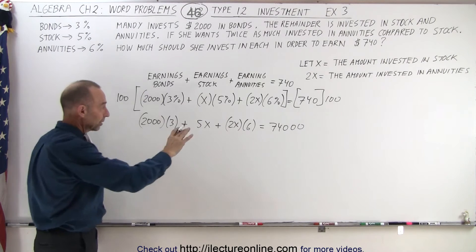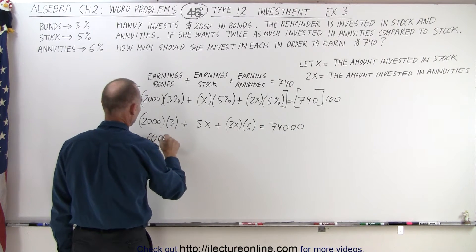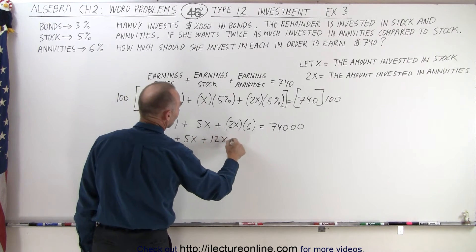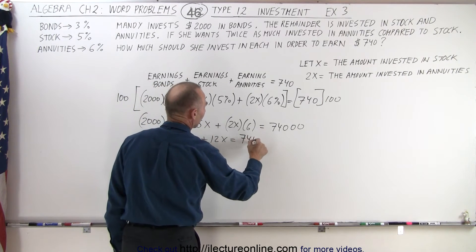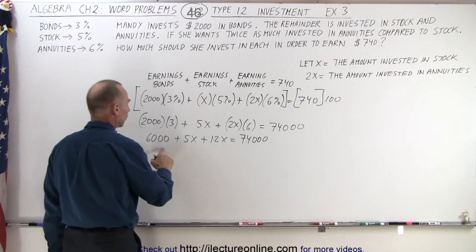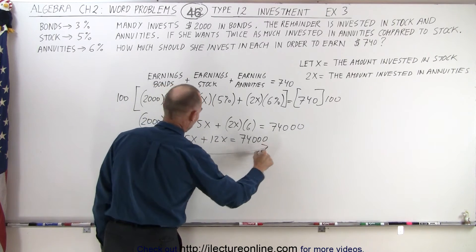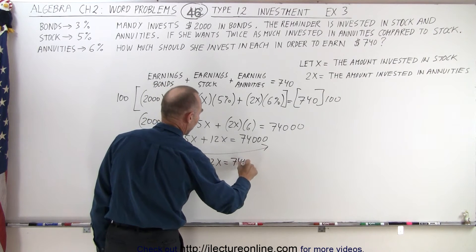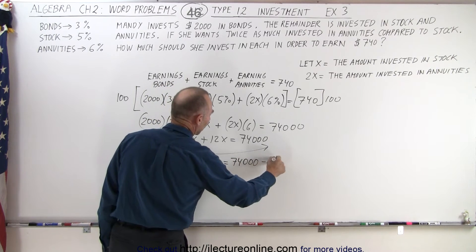Now let's get rid of the parentheses, so we get 6,000 plus 5X plus 12X is equal to 74,000. Moving the 6,000 to the other side, we get 5X plus 12X is equal to 74,000 minus 6,000.